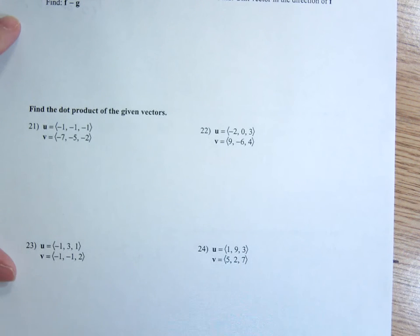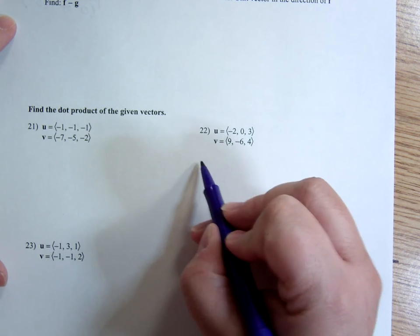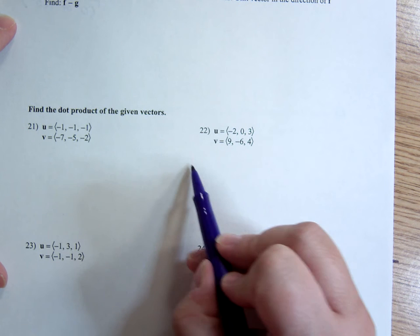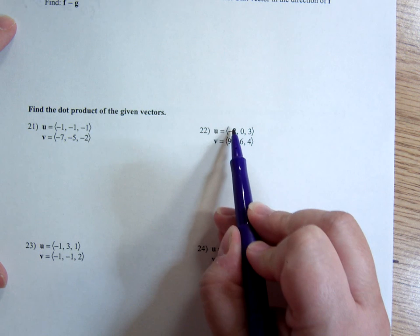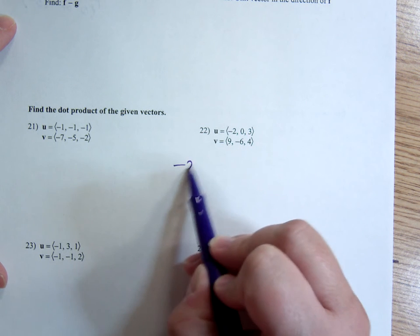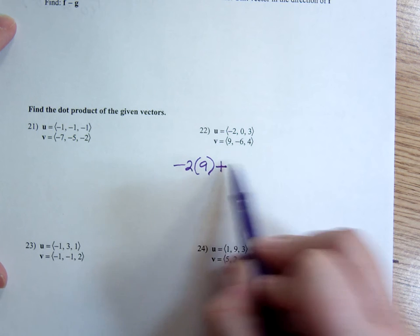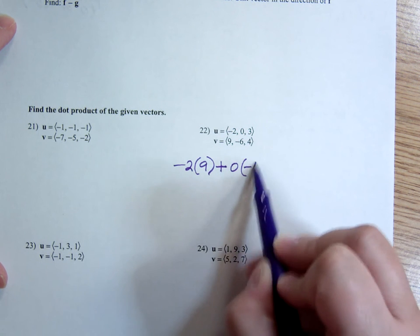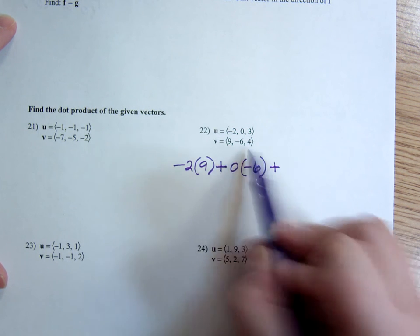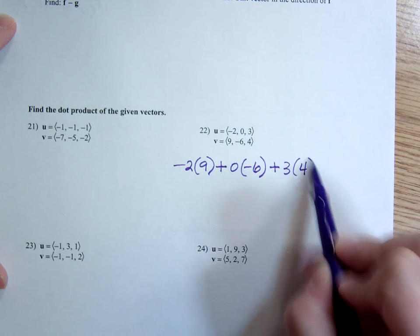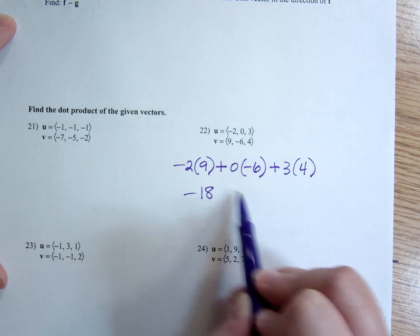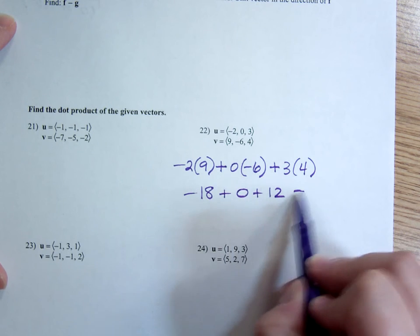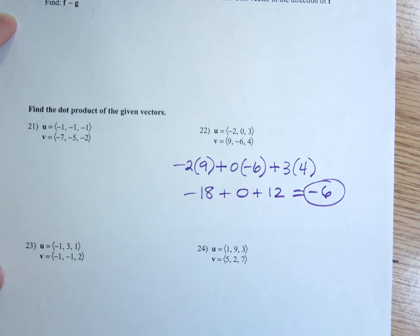Find the dot product. Remember, dot product is where you take it, and it's like multiplying matrices where this would be a row and this would be a column. You do this component, the x component here times the x component here, plus, and it's always plus, y component times y component, plus z component times z component. So negative 18, plus 0, plus 12, is negative 6. So there's your dot product.